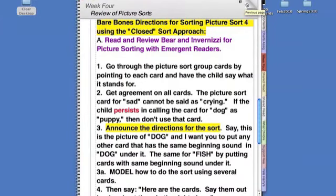First, you need to go through the picture sort group cards and point to each card and have the child say what it stands for. You've got to have agreement on all the cards. You can't let a child call the dog card, you can't let it be said as puppy. If they continue to do that, remove that card.